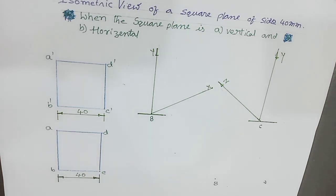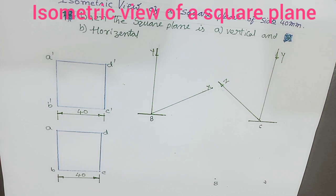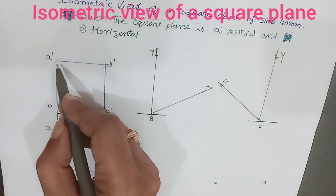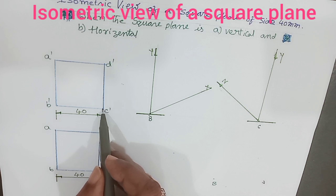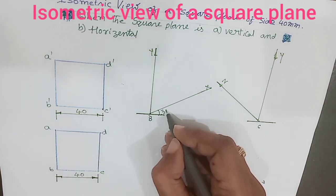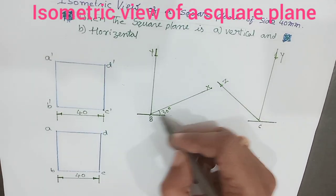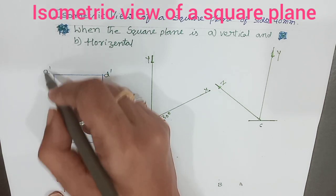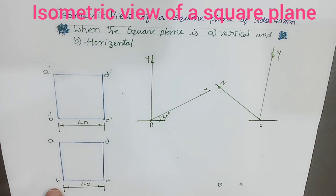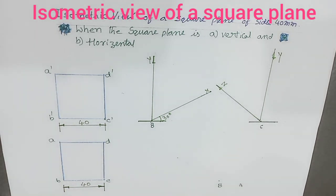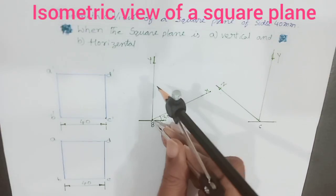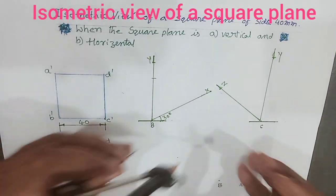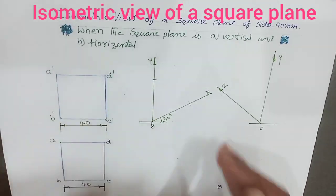As I said earlier, the lines which are parallel to the horizontal plane are to be tilted at an angle of 30 degrees to the XY line. Here I want to keep point B on the ground, so that BC is to be tilted at an angle of 30 degrees to the XY line. A dash B dash is vertical. Now with compass, taking BA dash as a radius and B as a center, draw an arc.